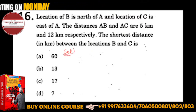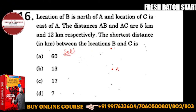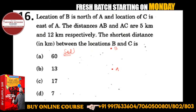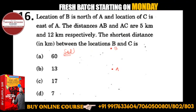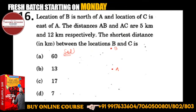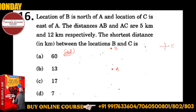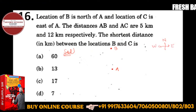Location B is north of A. First, this is A. Location B is north of A, and location C is east of A. You should know the direction first: this is east, this is west, this is north, this is south.